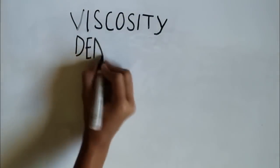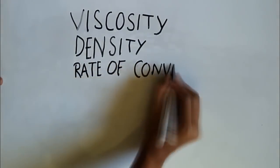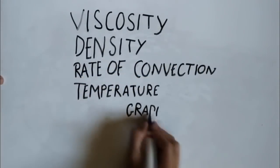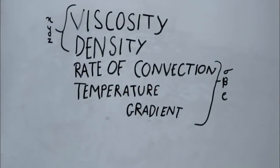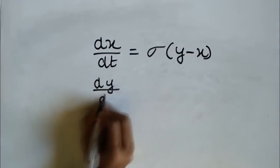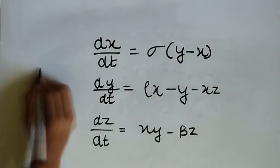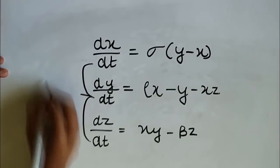Using properties like viscosity, density, rate of convection, and the temperature difference, we can create three equations that mimic the behavior of weather cycles. These are called the Lorenz equations, and they're a fancy mathematical way of describing what happens to the system over time.